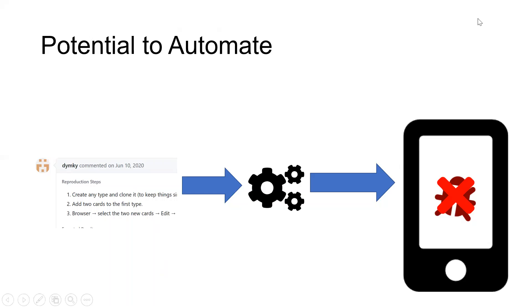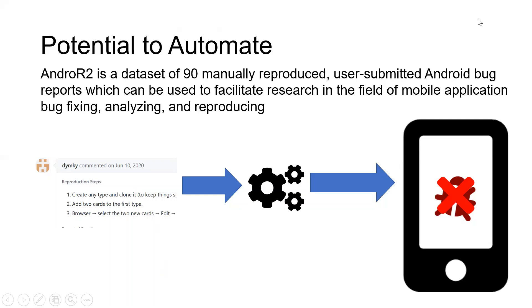That's the idea behind AndroR2. AndroR2 is a dataset of 90 manually reproduced, user-submitted Android bug reports, which can be used to facilitate research in the field of mobile application bug fixing, analyzing, and reproducing.